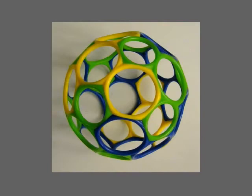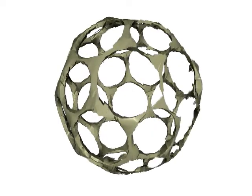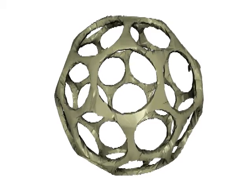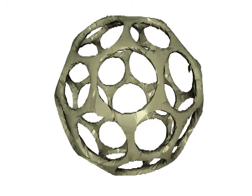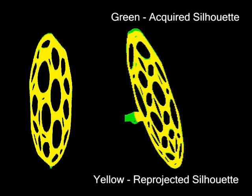We show the results of applying our technique to a wiry polyhedral ball. 45 views were used in this experiment. We now trace the progression of our optimization algorithm for this object starting from the erroneous reconstruction. The match between the acquired and re-projected silhouettes increases until it becomes almost perfect.